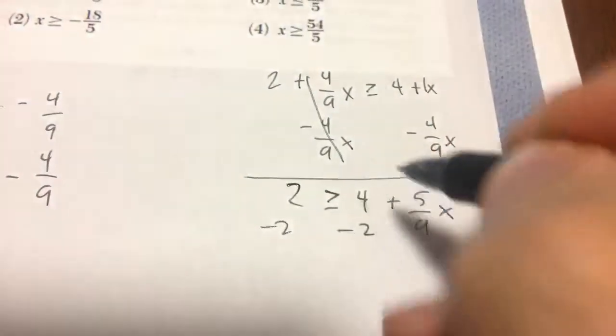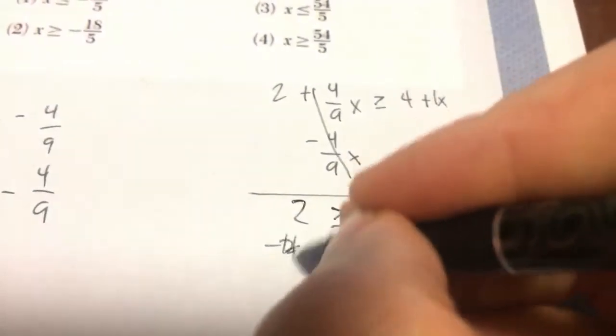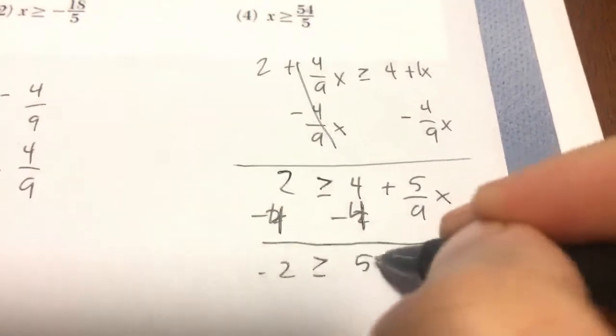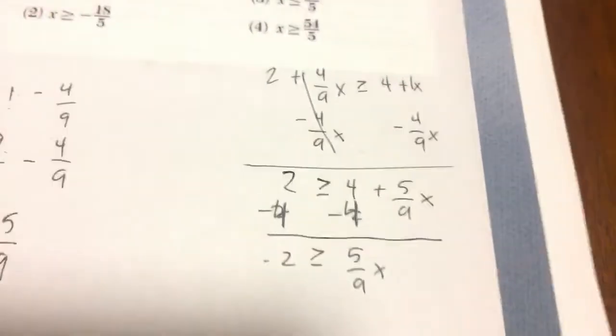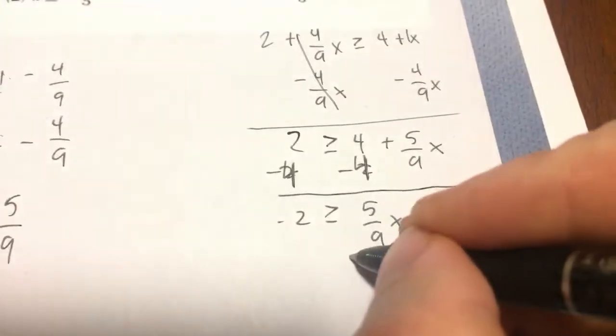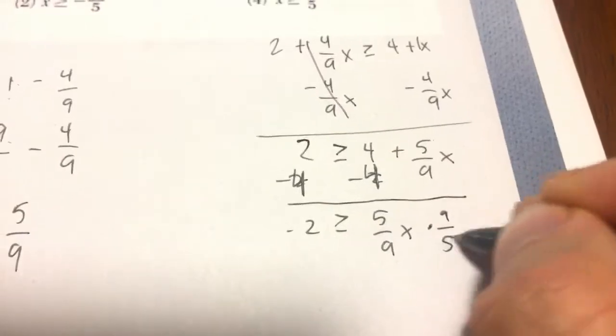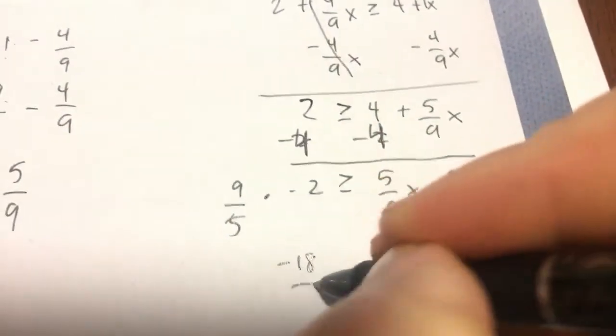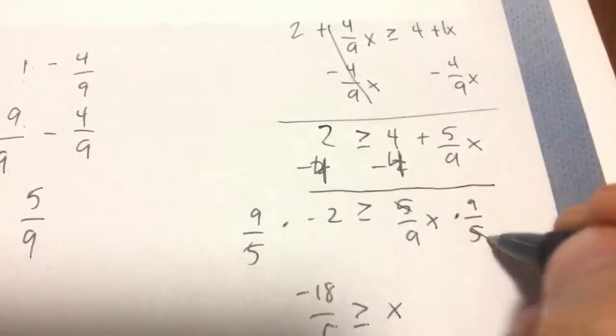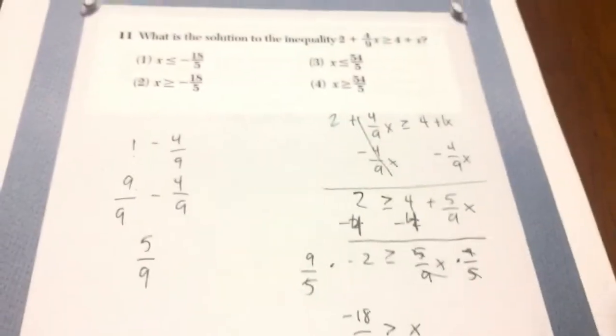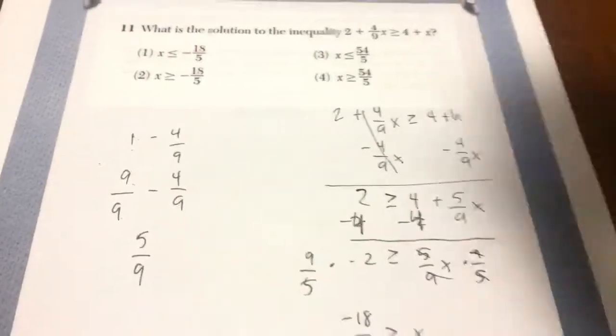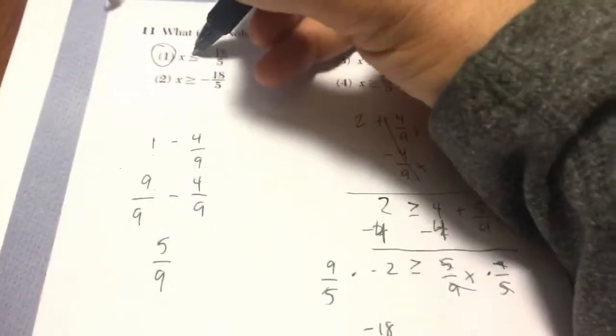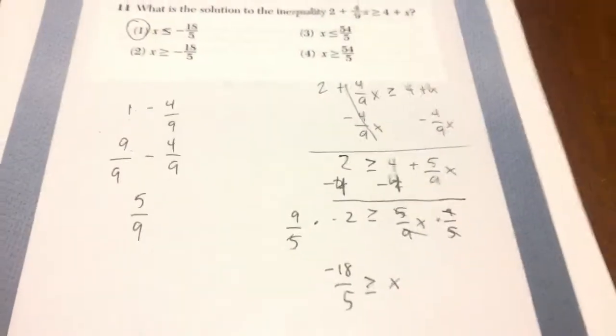I subtract 2, or excuse me, subtract 2, subtract 2, I get negative 2 is greater than or equal to 5/9x. Now if you type in your calculator correctly you can divide by 5/9, but I recommend multiplying both sides by the reciprocal. I should get negative 18/5 is greater than or equal to x. And that looks like that matches with choice 1. Notice how this is pointing towards the x, it's still pointing towards my x.